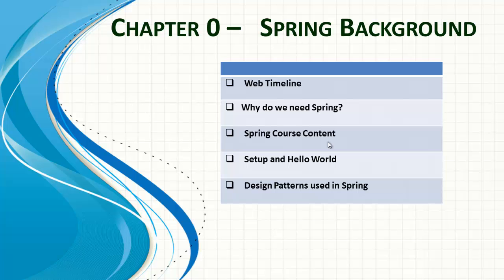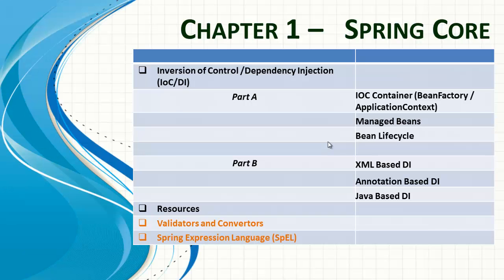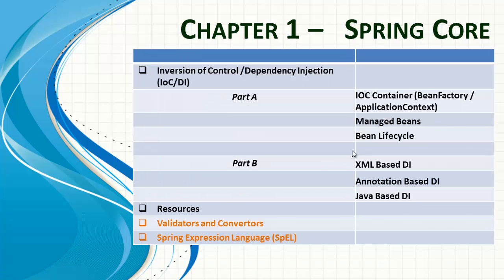Chapter 1 is Spring Core. Here we start with Inversion of Control and Dependency Injection, the IoC container itself, managed beans, and the bean lifecycle. In Part B we look at XML-based dependency injection, annotation-based dependency injection, and Java-based dependency injection. We'll also look at the resources used in Spring.